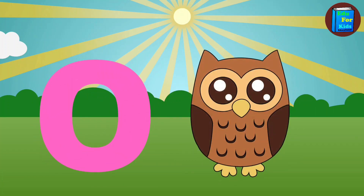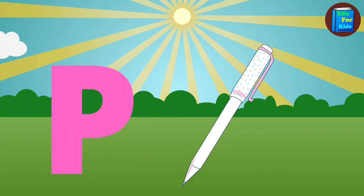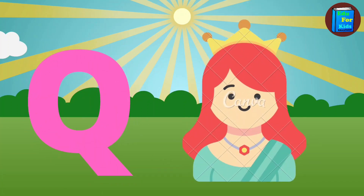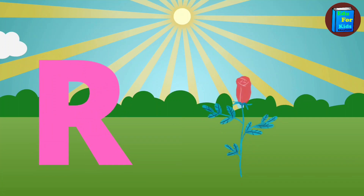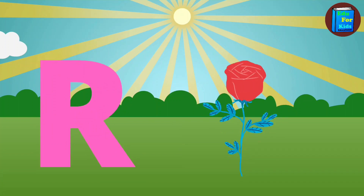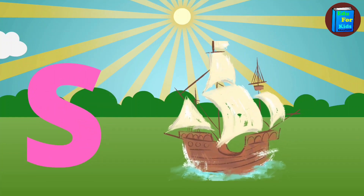O for owl. P for pen. Q for queen. R for rose. S for sheep.